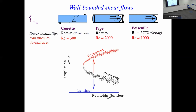We're going to talk about wall-bounded shear flows. These are the three prototypes: plain Couette flow, pipe flow, and plain channel flow or Poiseuille flow — pressure driven between two plates. It's well known that these flows are linearly stable, and hence the main tool that has been used for predicting instabilities and transition, linear stability analysis, cannot be used. The turbulence is somewhere far away, at a finite distance.